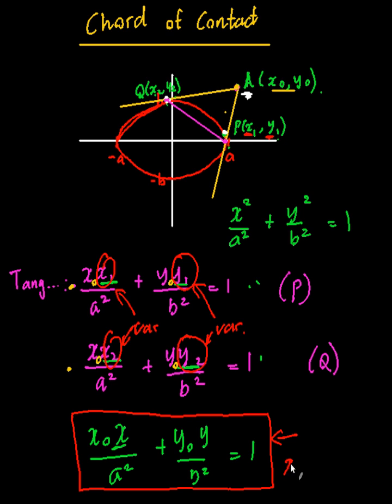Just writing one line: x1 changes into x2 and y1 changes into y2, therefore this is the equation of the chord of contact.